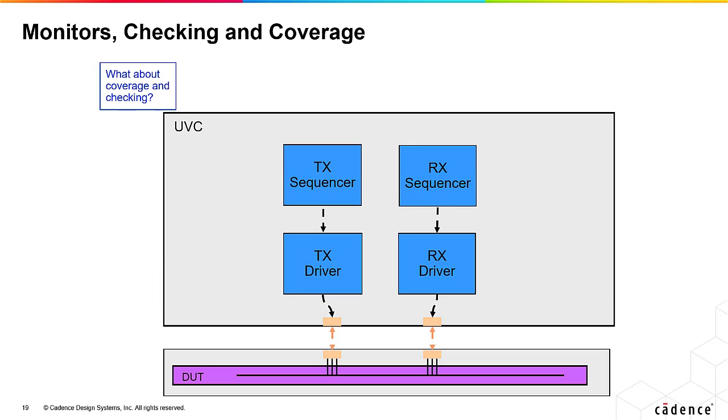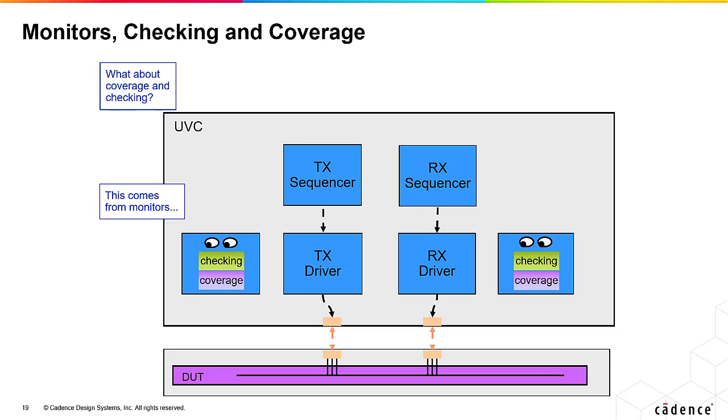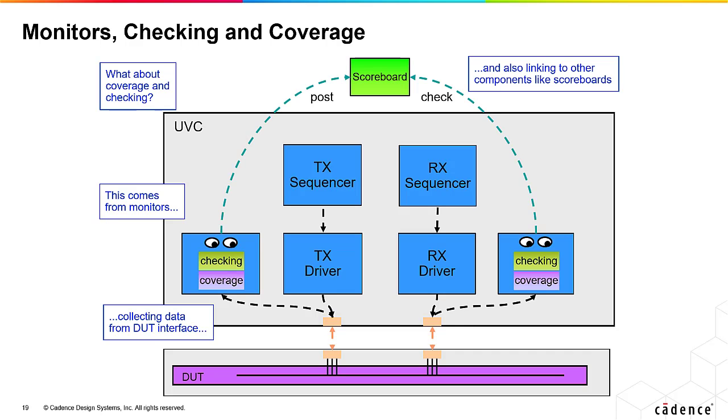What about coverage and checking? We need another component called a monitor for this. These connect directly to DUT interfaces so they see the same data as the DUT. The data captured by the monitor can be used for local coverage and checking and sent onto other components such as scoreboards. The input monitor posts data to the scoreboard and the output monitor sends result data for checking against the inputs.